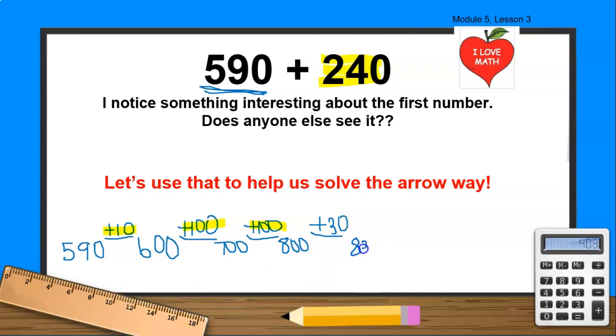And 800 plus 30 gives me... So, let's see boys and girls. Remember the numbers that are on the arrow, when you add those numbers they have to equal this. So 10 plus 100 plus 100 plus 30 gives me 240. Great job boys and girls. We just solved this problem together. You're gonna work some more problems like this in class.